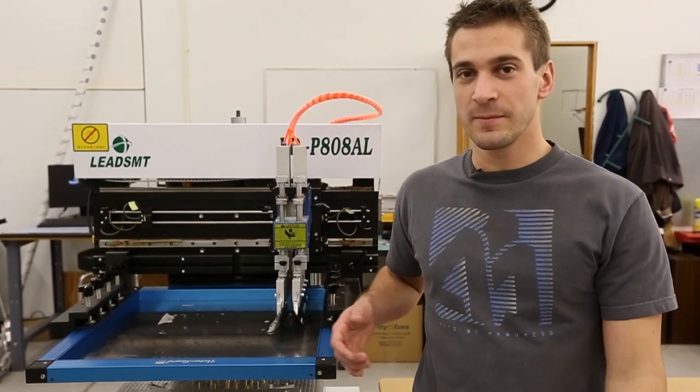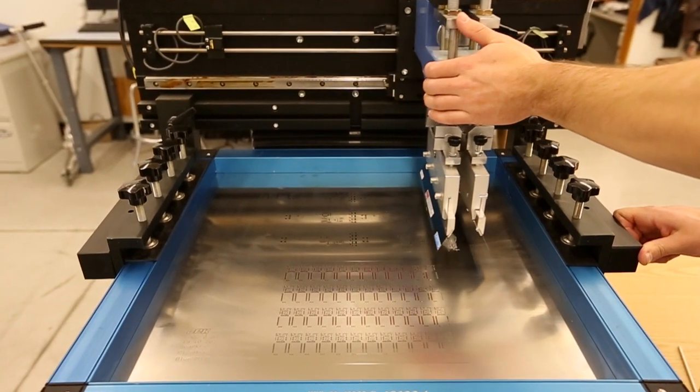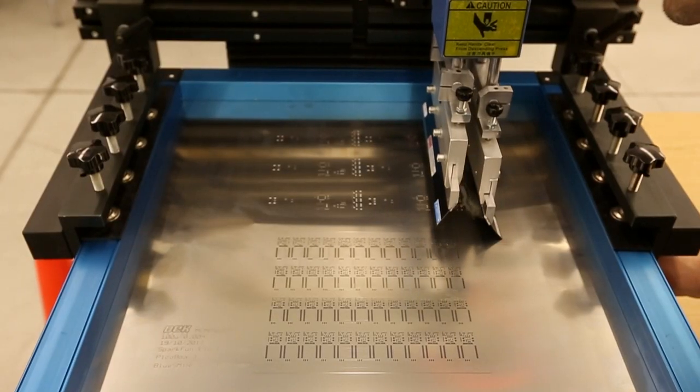So after you get all the fine-tuning done, all you have to do is apply solder paste to the foil and then you move the blades over the paste and hit the two green buttons and it takes off.